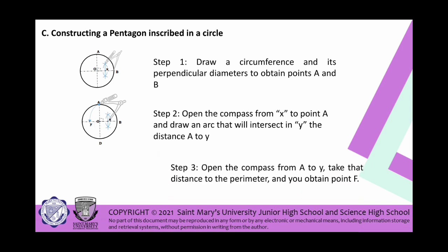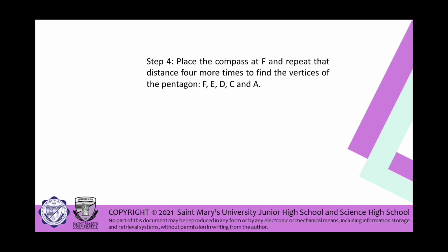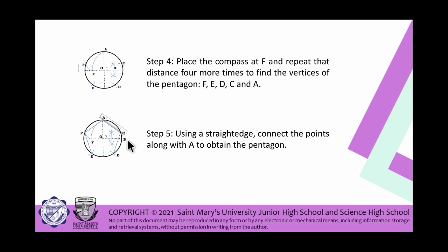Step three: open the compass from A to Y to take the distance to the perimeter, obtaining point F. Step four: place the compass at F and repeat the distance four more times to find the vertices of pentagon F, E, B, C, and A. Step five: using a ruler or straight edge, connect the points — A to C, C to D, D to E, E to F, and F to A — to obtain the pentagon.